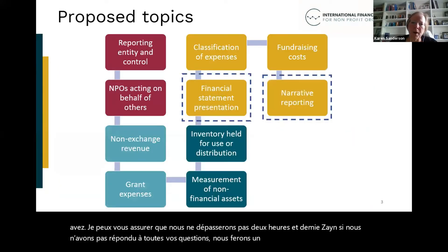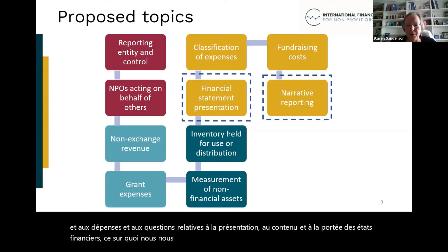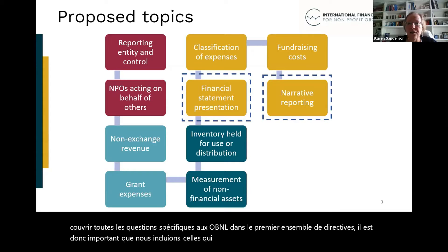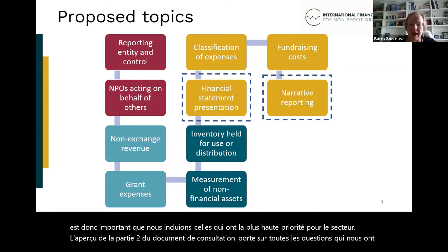We're proposing 10 topics for inclusion in the first set of non-profit guidance. The 10 topics cover matters relating to the reporting entity, revenue and expenses, aspects of the balance sheet, and matters relating to the presentation, content and scope of financial statements — which is where we're focusing today. We won't be able to cover all NPO-specific issues in the first set of guidance, so it's important that we include the ones with highest priority for the sector. The overview in part two of the consultation paper looks at all the issues raised with us so far and takes you through how we prioritised these.